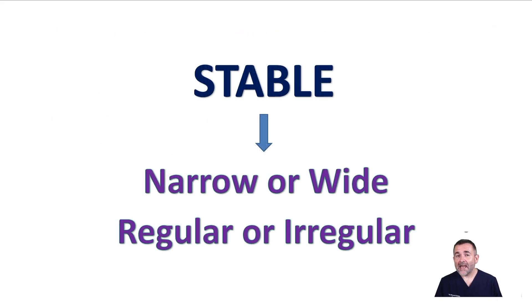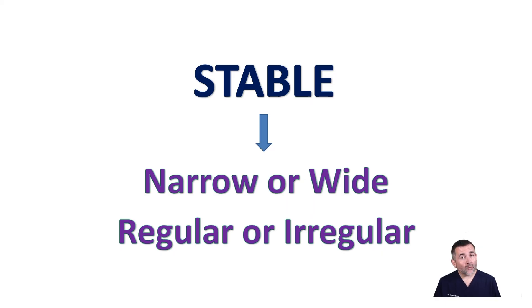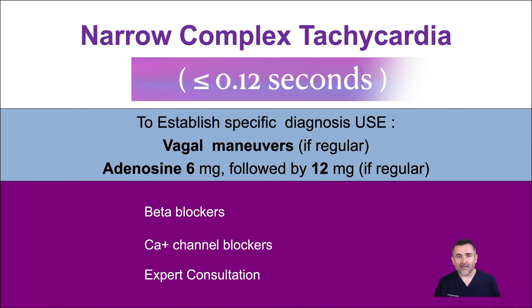On the other hand, if the patient is stable, the treatment path is determined by whether the QRS is narrow or wide and whether the rhythm is regular or irregular.